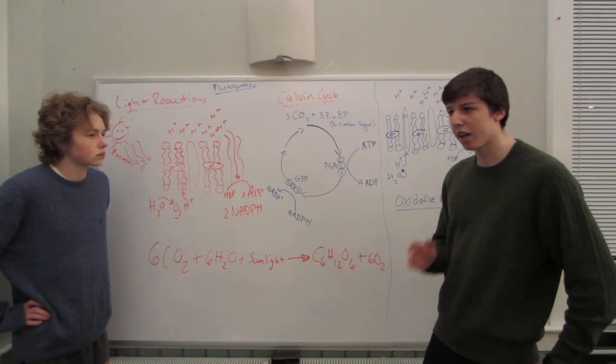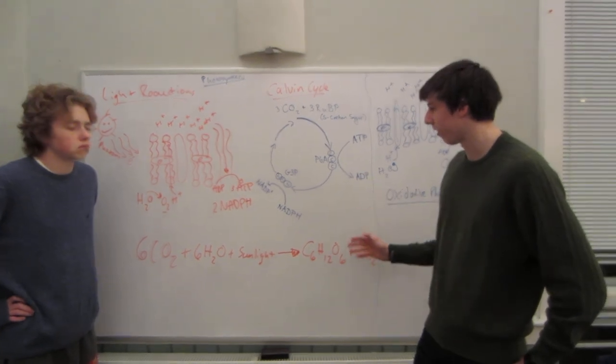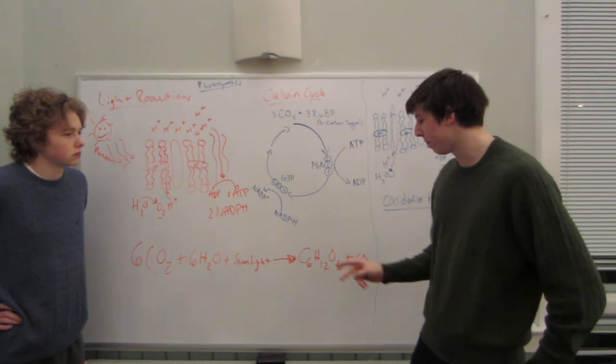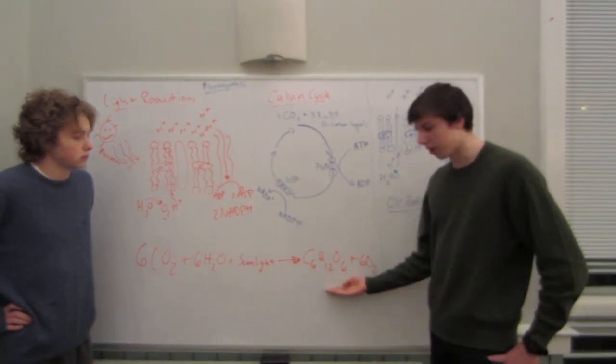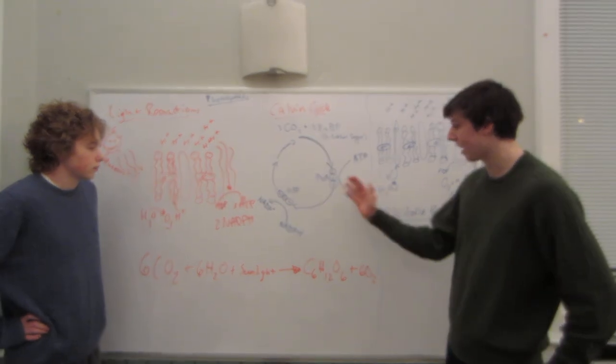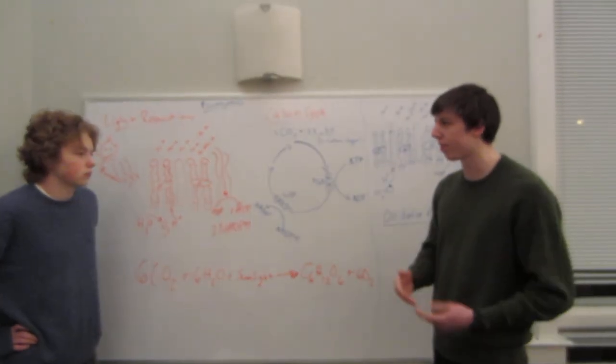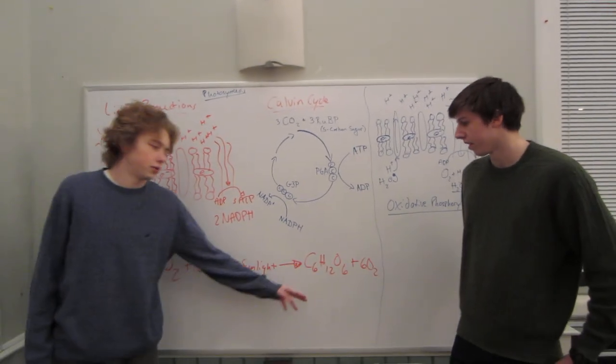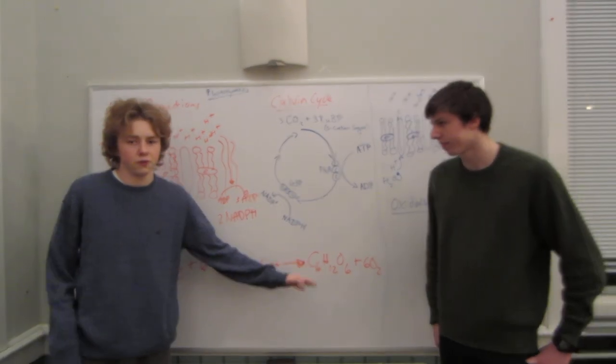Now G3P is the final product of the Calvin cycle. When the Calvin cycle completes itself twice, there will be two G3P, which is equivalent to glucose, C6H12O6. The ADP and NADP plus are then reused in the light reactions. C6H12O6 and 6O2 are the final products of photosynthesis.